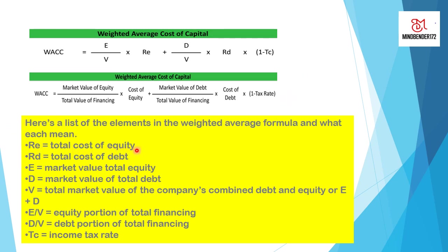RE equals total cost of equity. RD equals total cost of debt. E is market value of the total equity and D is market value of total debt. V is the total market value of the company, combined debt and equity, or E plus D. E/V is the equity portion of total financing. D/V is the debt portion of total financing. TC is the income tax rate.